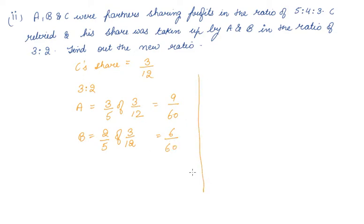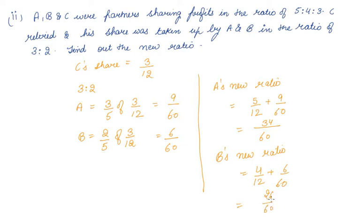Now as they have taken, so A's new ratio will be his old share 5/12 plus the amount he gained 9/60, so 34/60. B's new ratio will be his old share that was 4/12 plus 6/60, that is 26/60.